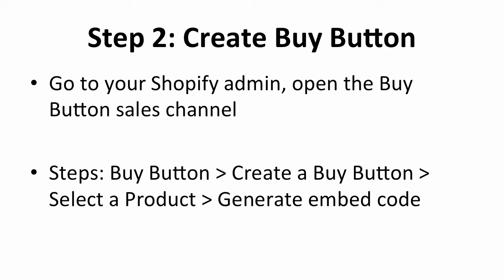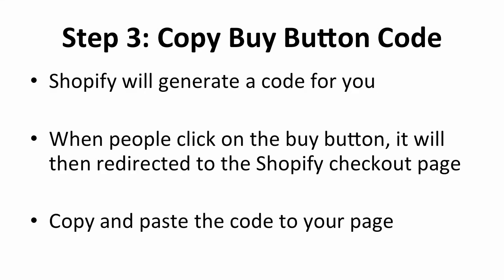On the create a buy button page, you can customize the buy button according to your needs. You can edit the button's color, text, and appearance. For instance, if you feel that an orange color buy button would convert better than other colors, you can change it here. Once you're done editing the buy button and have selected the product, double check the price and design. Then click on the generate embed code button at the bottom of the page. Shopify will then generate a code for you — sometimes it may take a little bit, so just be patient.